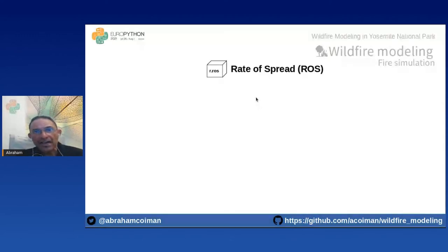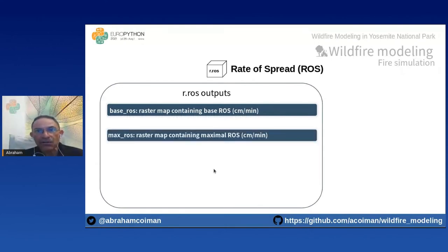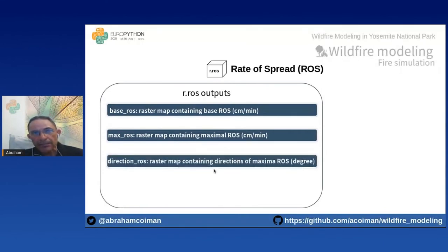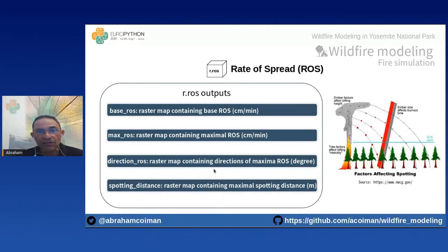The r.ros module produces the following outputs: a raster map of base rate of spread, a raster map of direction of maximum rate of spread, a raster map of maximum rate of spread, and a raster map of maximum spotting distance — which is the distance covered by burning embers during wildfires, as shown in the figure on the slide.